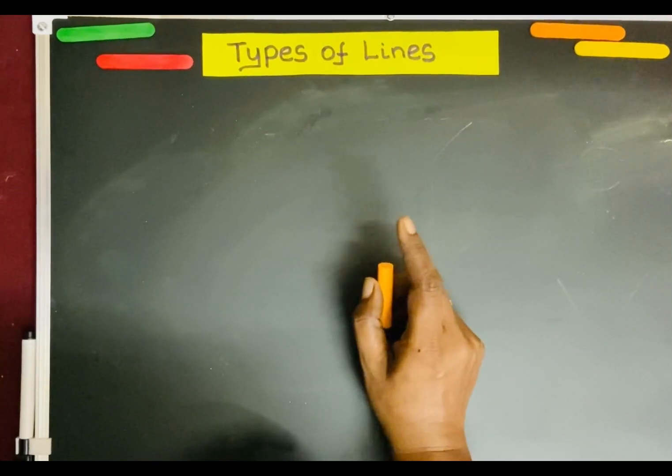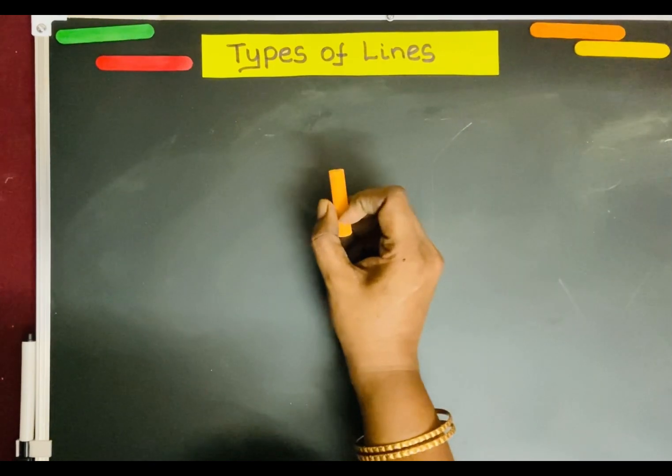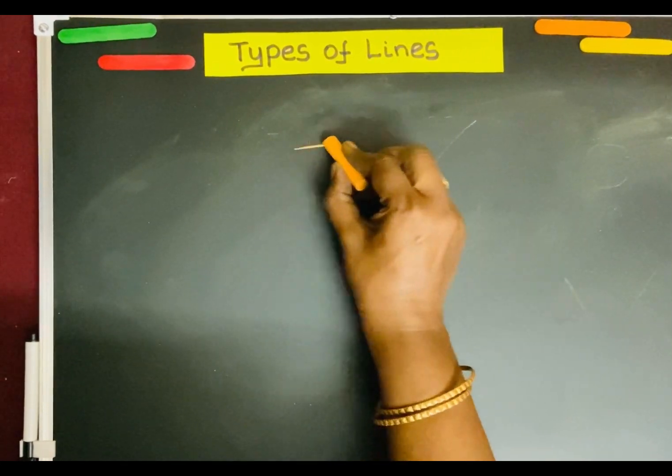We can also create irregular shapes with the help of slanting lines and curved lines.